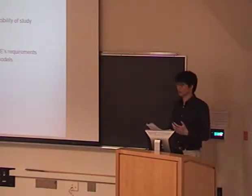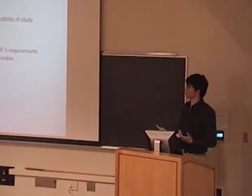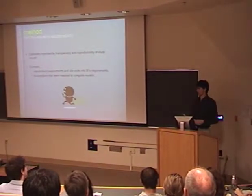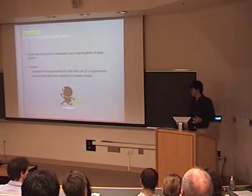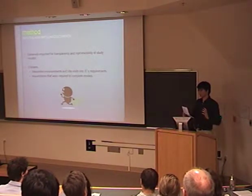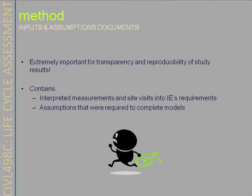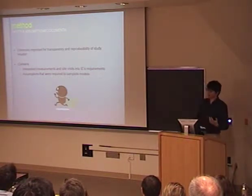However, when doing the quantity takeoff, we encountered several limitations and challenges. One major limitation is drawing clarity issues. Another is that some material specification information is out of the range of the impact estimator. As a result, we had to do site visits and research for assumptions. It's very important to make assumptions transparent and reproducible, so we summarized all assumptions into documents, including integrated measurements, assumptions used to compute models, and information converted to impact estimator requirements.